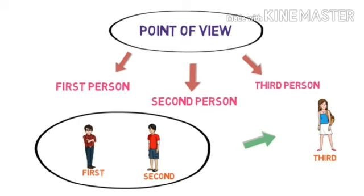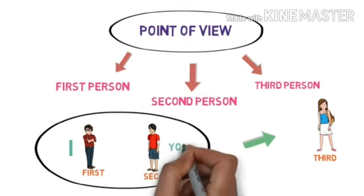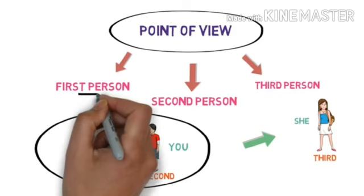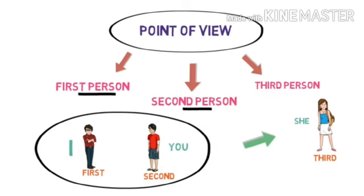John can be telling Peter like this. I am telling you that she is very intelligent. Okay. Now, you have understood the first person, second and third person.